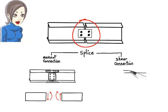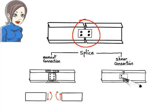In a shear splice, however, no internal moment can develop at the joint. The joint acts as an internal hinge. It can only support a shear force.